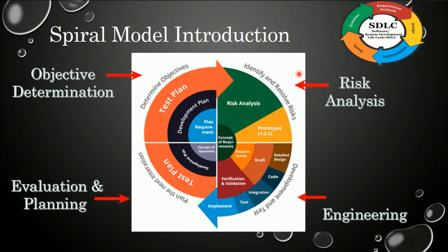The third phase is risk analysis. Risk is an expectation of loss in the future that may or may not occur. Risk analysis provides better tools to analyze all risks that might be related to technical risk or other risks that might occur during the development of the systems. This is the third and most important phase of the spiral model.